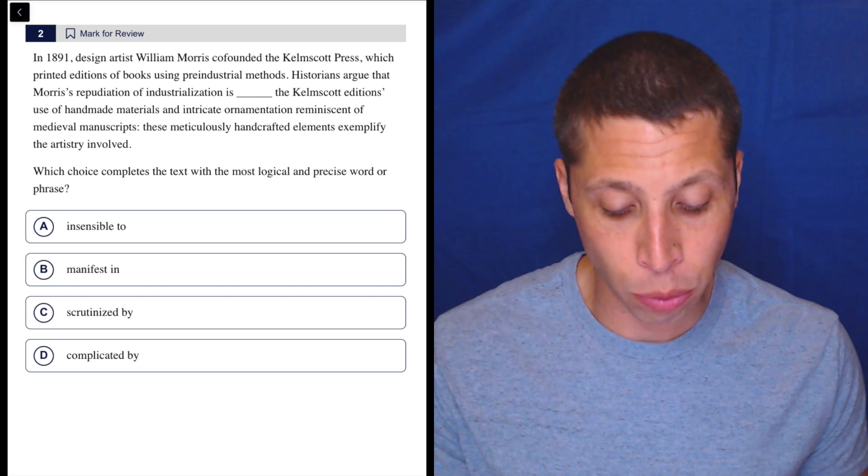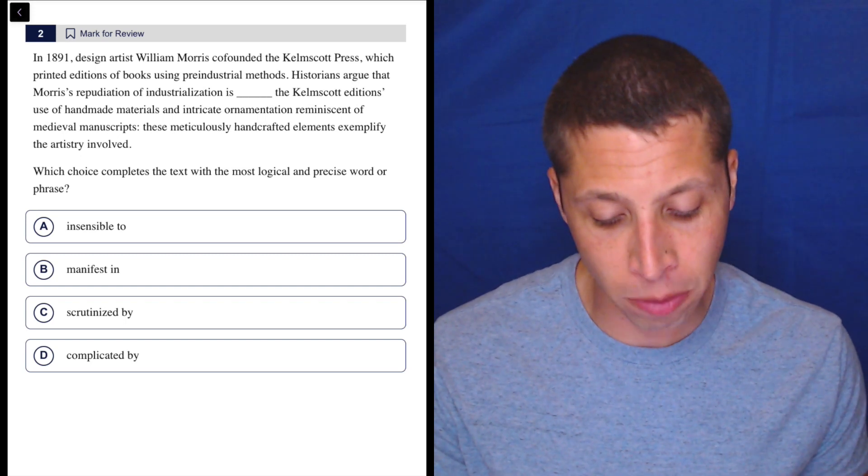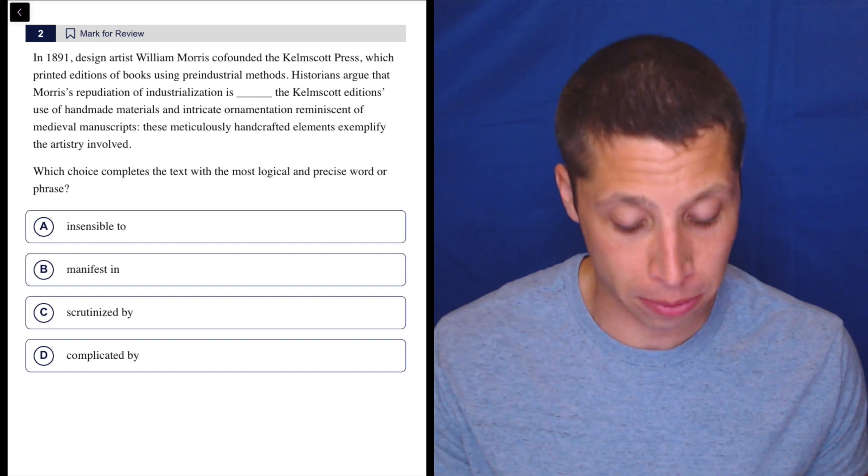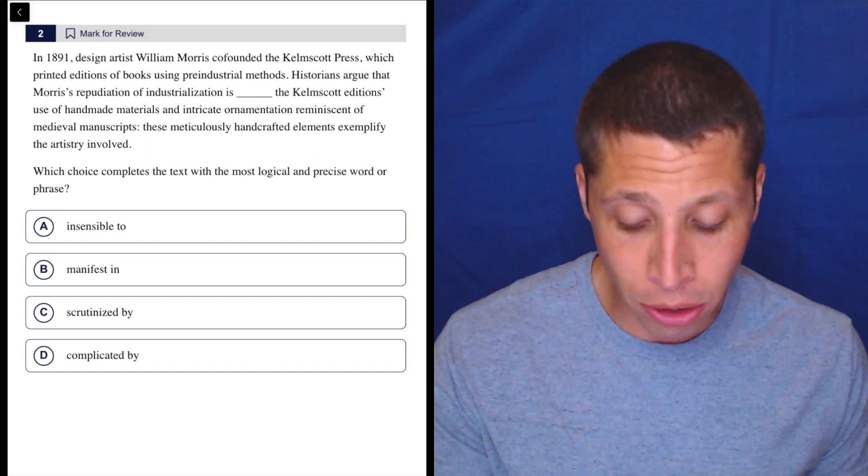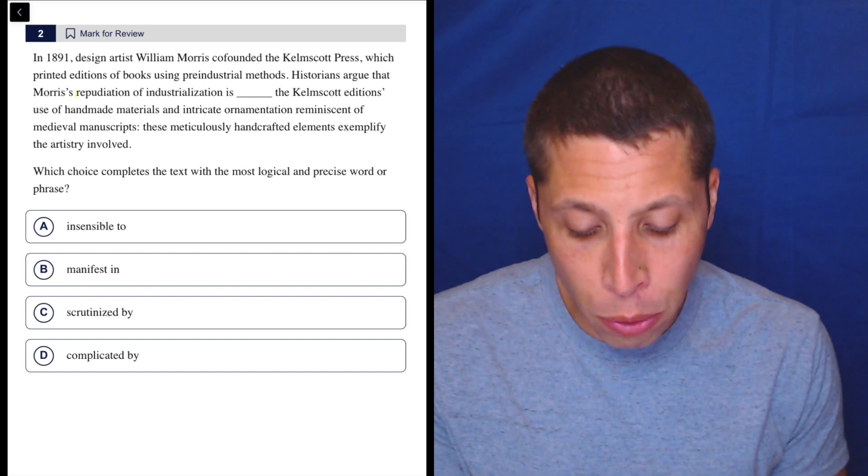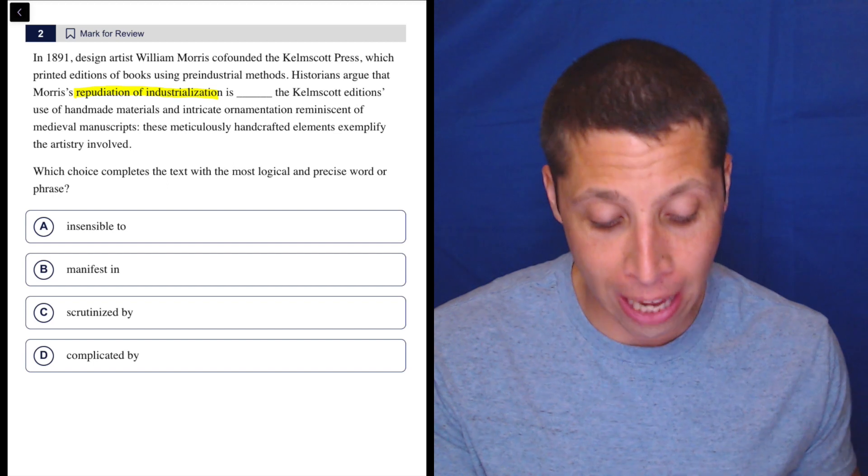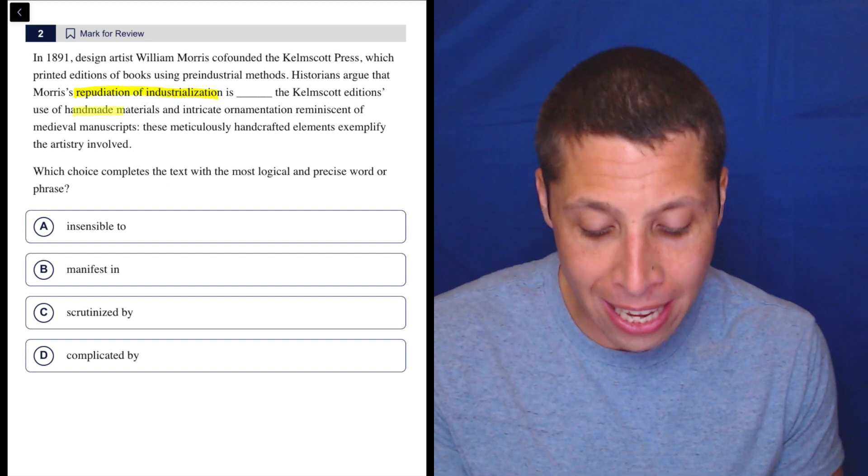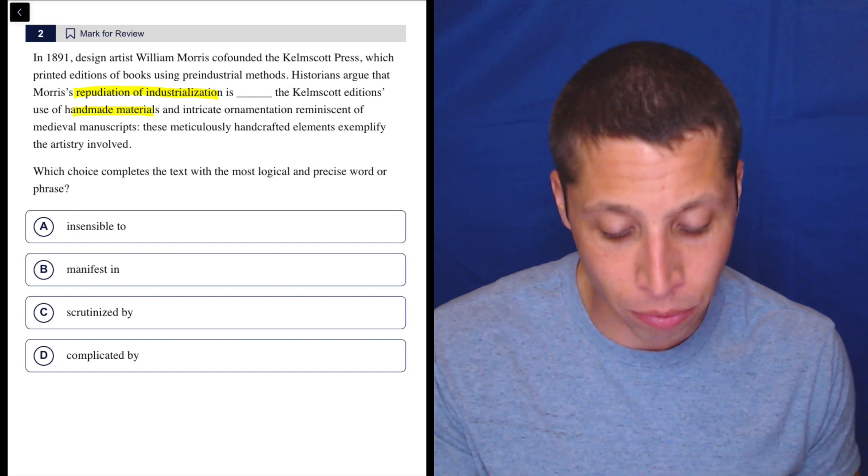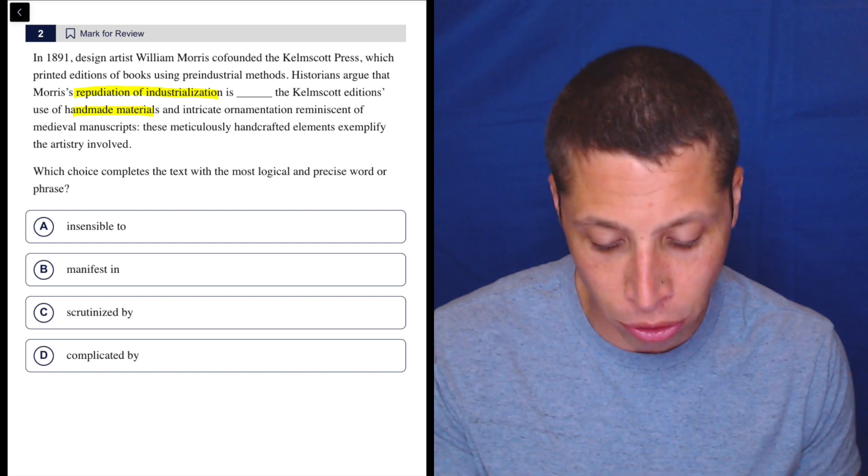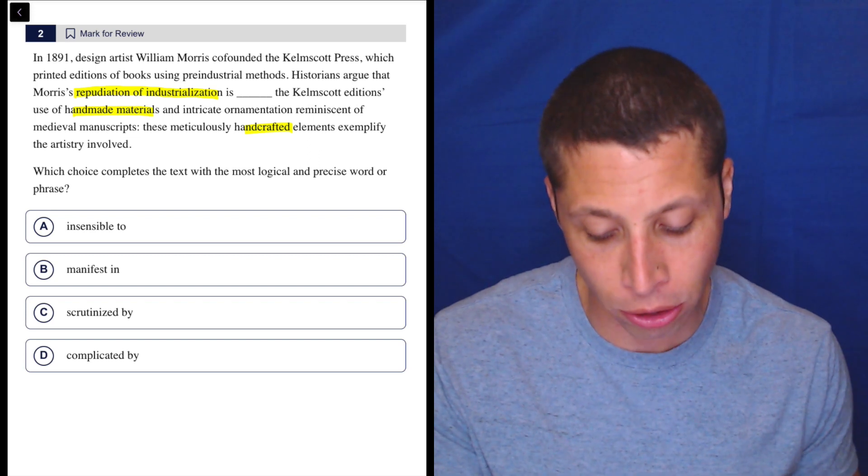So let's take a look. In 1891, design artist William Morris co-founded the Kelmscott Press, which printed editions of books using pre-industrial methods. So far it doesn't seem important, but it will be when we get there. Historians argue that Morris's repudiation of industrialization is blank the Kelmscott edition's use of handmade materials and intricate ornamentation reminiscent of medieval manuscripts. These meticulously handcrafted elements exemplify the artistry involved.